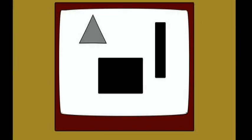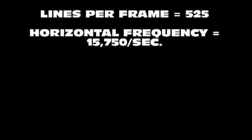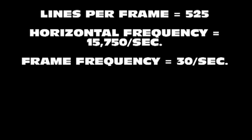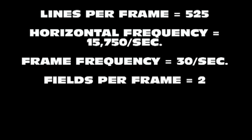In real life, this whole process took place 30 times per second, but not using just 24 lines as in our example, but drawing 525 lines with a much smaller dot. The frequency of the horizontal scan was 15,750 lines per second. The frequency of the vertical scan was 30 frames per second, divided into 60 fields per second.